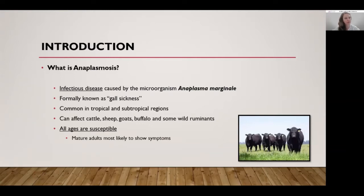It can affect not only cattle but also sheep and goats and buffalo as well as some wild ruminants. Interestingly, all ages of cattle are susceptible to anaplasmosis, but it's the mature adults that more often are most likely to show symptoms associated with this disease.